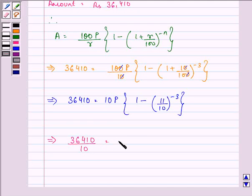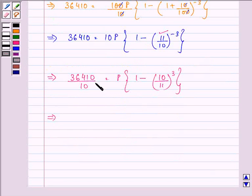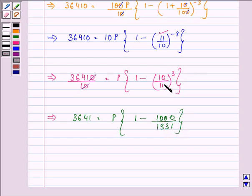We have 36,410 divided by 10 equals P times [1 minus 10 upon 11 raised to the power 3], which is P times [1 minus 1000 divided by 1331].